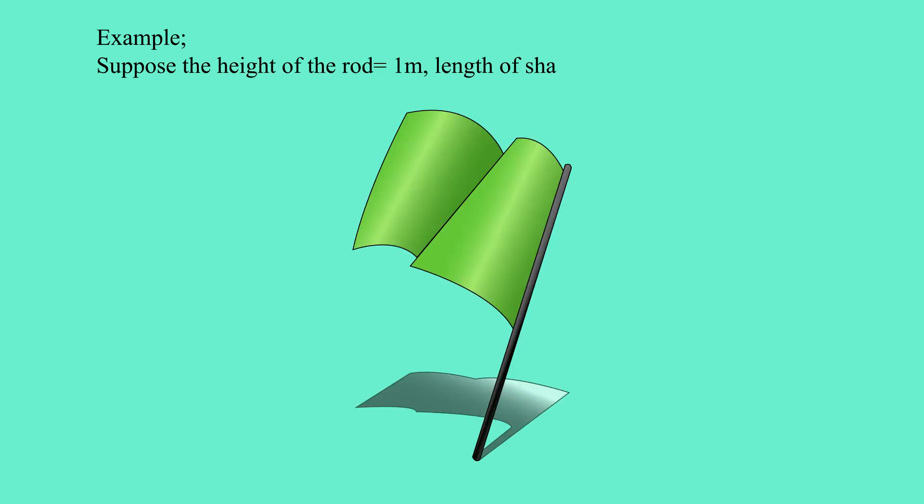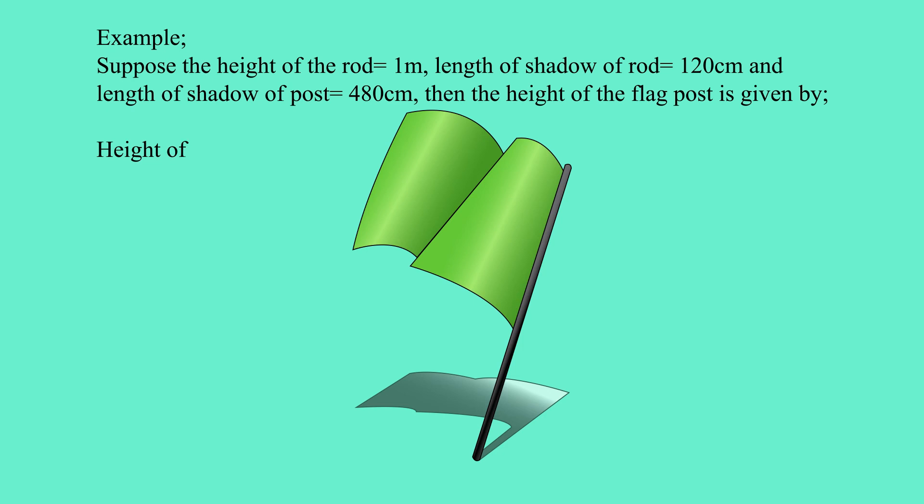Example: Suppose the height of the rod equals 1 meter, length of shadow of rod equals 120 centimeters, and length of shadow of post equals 480 centimeters. Then the height of the flag post is given by: HP over 100 centimeters equals 480 centimeters over 120 centimeters. Height of post, HP, equals 100 times 4 equals 400 centimeters.